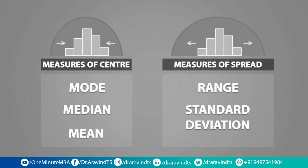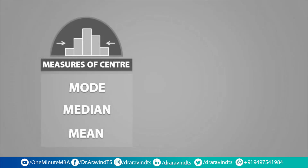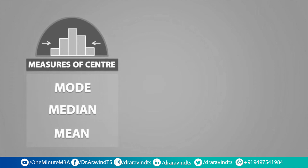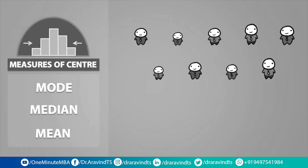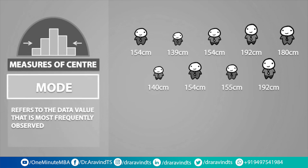We will look at how we can determine the measures of center first. So suppose I took a random sample of 9 people and measured their heights. The mode of a data set refers to the data value that is most frequently observed. Notice how the number 154 appears 3 times in this data set, which means that the mode of this data set is equal to 154.